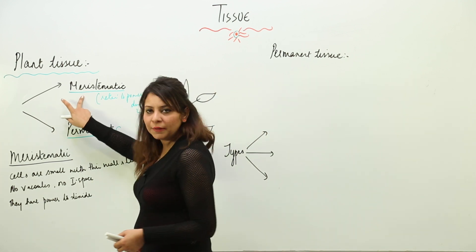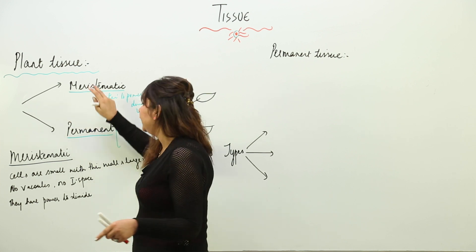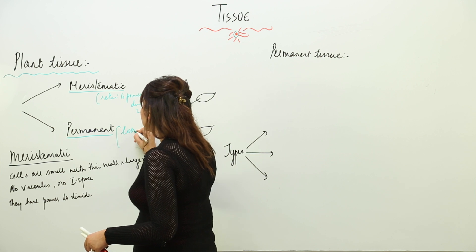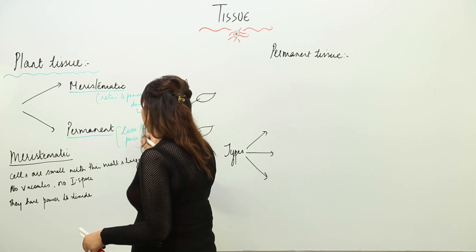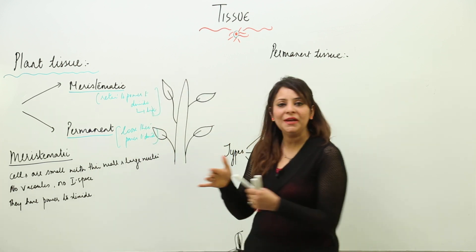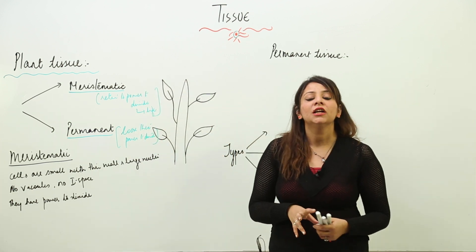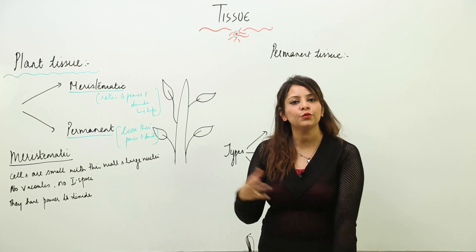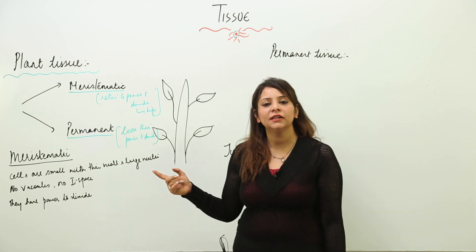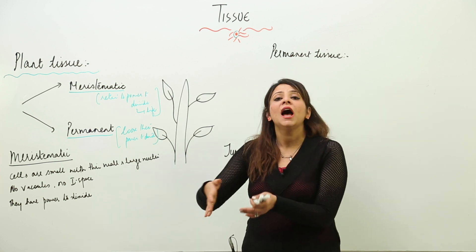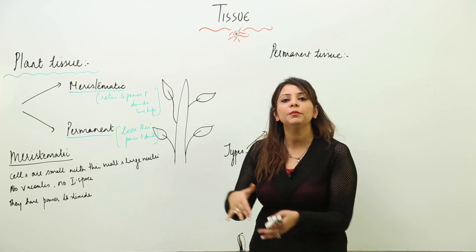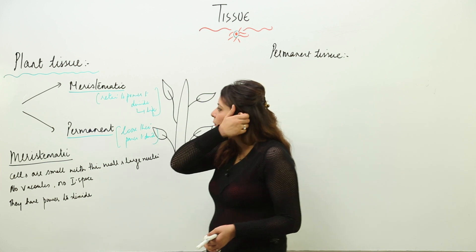Permanent cells are those meristematic cells which actually lose their power to divide — they form a permanent tissue. So the basic difference is: meristematic cells keep dividing throughout life and give rise to new cells, whereas permanent tissue is formed by meristematic cells that have lost their power to divide.